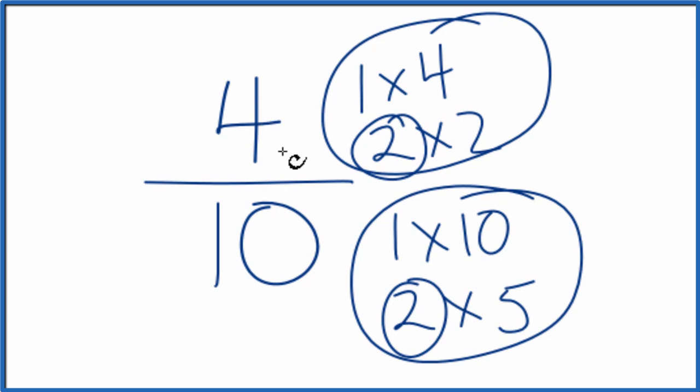So we can divide 4 by 2, and then 10 by 2, and then we'll have simplified 4 tenths. Let's move these to the other side.